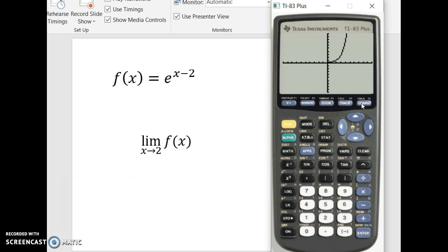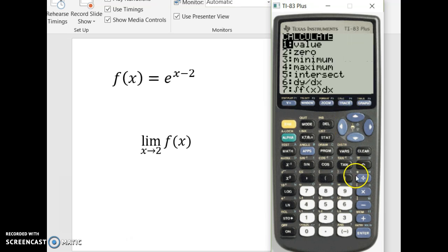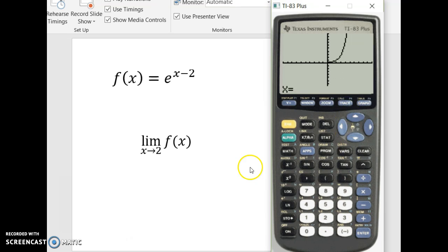So it looks like there's going to be a really easy limit to find. And if I just go up to calc, number 1 is value. What happens as x goes to 2? What happens at x equals 2? Well, the function itself is 1. So we're going to expect this limit to be 1.